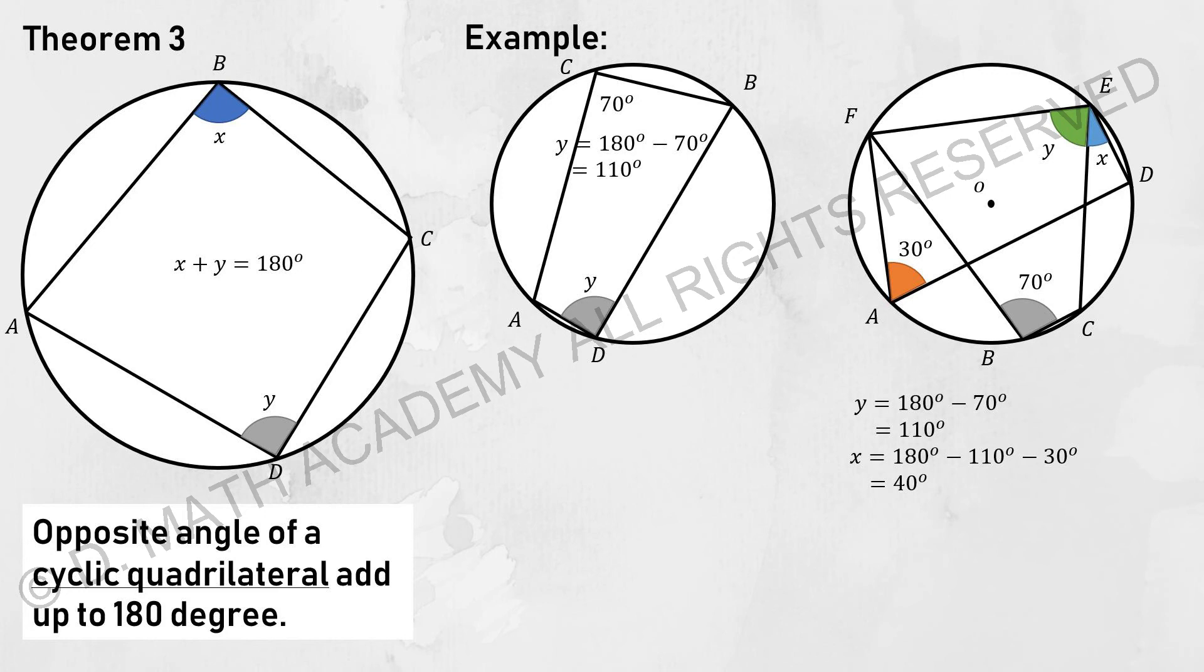So 110 plus X plus 30 will be 180. After I shift off the excess variable, I will get my X as 40.